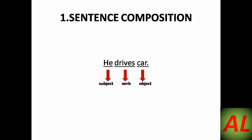A sentence is made of three components: subject, verb, and object. The subject is any person or thing which is doing an action. The action being done is known as the verb. The object is anything on which the action is being done. For example, in 'he drives car,' 'he' is the subject, 'drives' is the verb, and 'car' is the object.